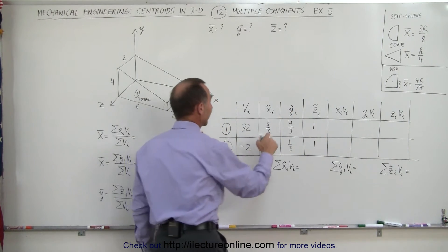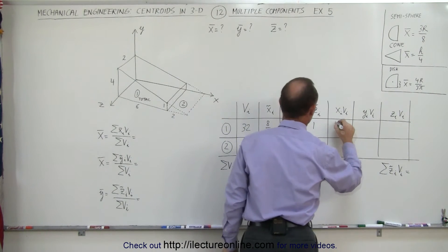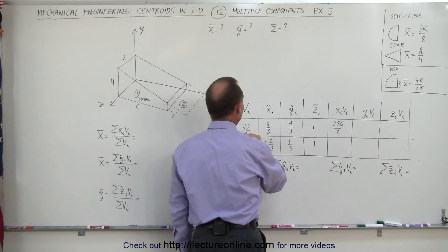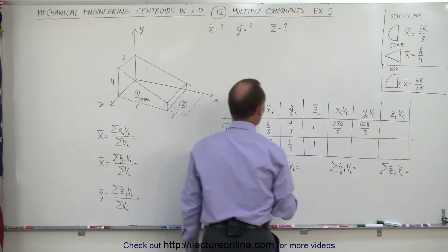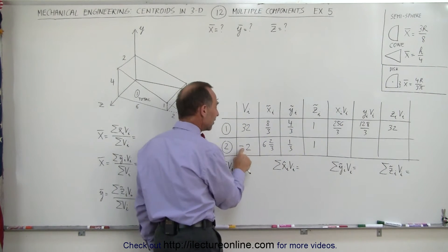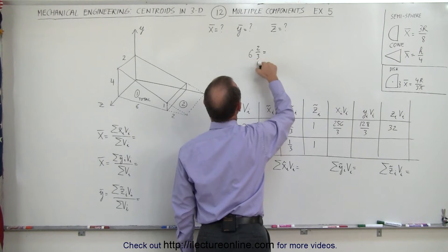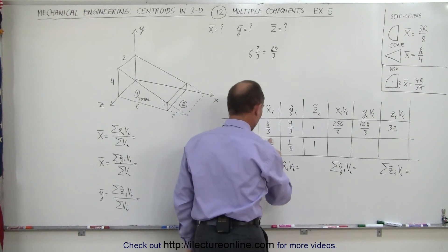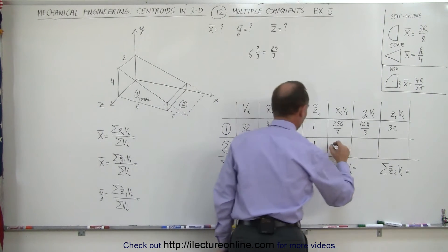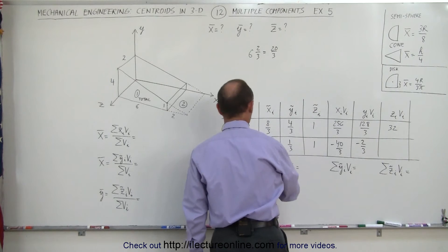Now we're ready to multiply. Multiply the x-coordinate times the volume: eight-thirds times thirty-two — that would be two-fifty-six divided by three. For the y-direction, four-thirds times thirty-two — that's half as much — that's one-twenty-eight divided by three. And the z-direction would be one times thirty-two. For the missing piece, notice we're multiplying times the negative volume. Six and two-thirds equals eighteen plus two over three — that would be twenty-thirds. Twenty-thirds times negative two would be minus forty-thirds. One-third times negative two is minus two-thirds. And one times negative two is minus two.